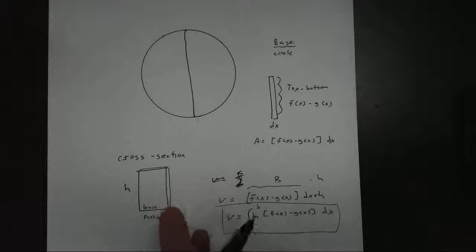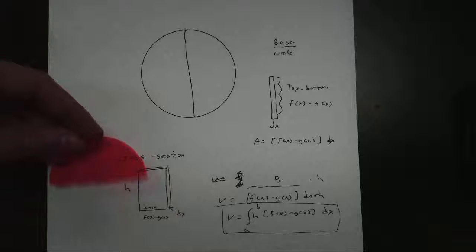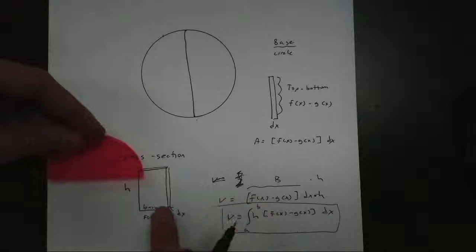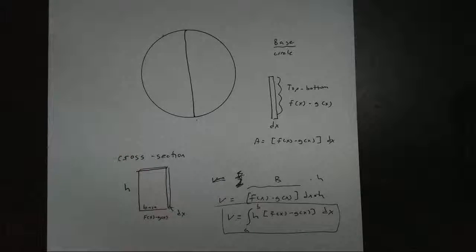Now different cross-sections will have different formulas. For example, a semicircle - we have a different formula for that as well, which we'll talk about in part two. So if you have time, go ahead and go to part two, and we'll take a look at some more.